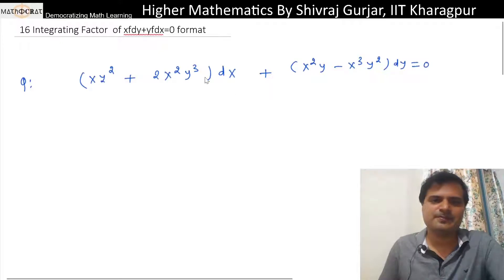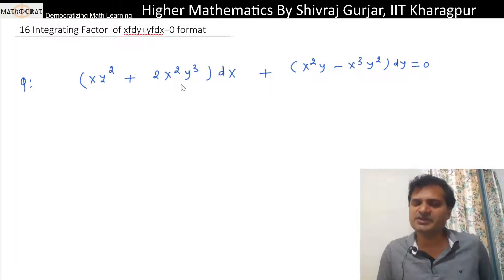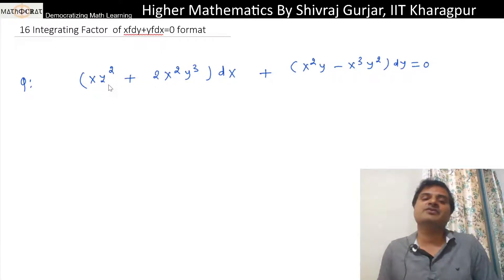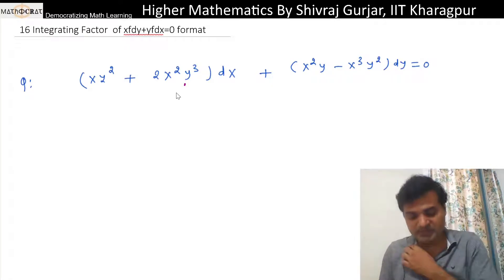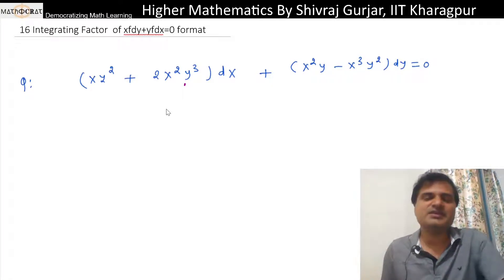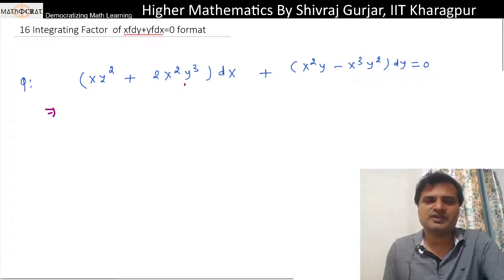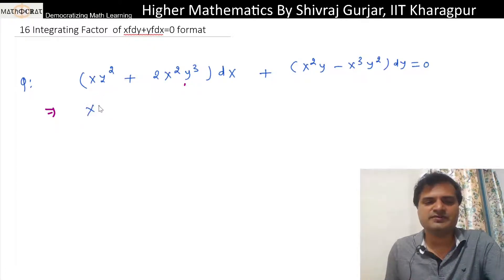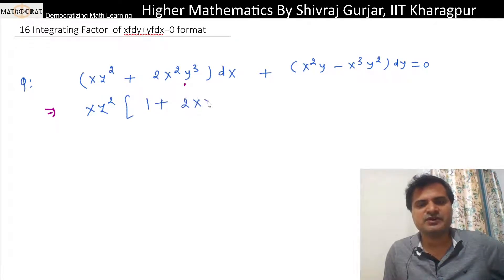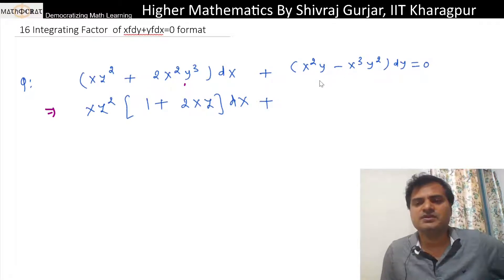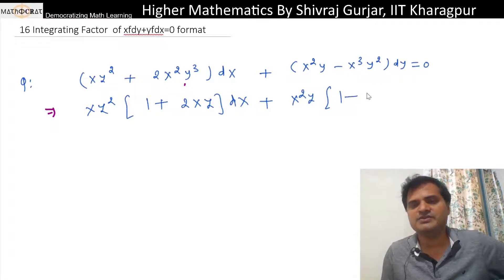Let us discuss this. Look — this is not homogeneous because the degrees are not the same: if we put kx and ky, one term gives k to the power five and the other gives k to the power three. Since it's not homogeneous, variable separable also doesn't seem applicable by inspection. So let's check this format — here x·y is common, in fact x·y² is common. Taking x·y² common, we get x·y²·(1 + 2xy)dx plus x²·y·(1 - xy)dy = 0.